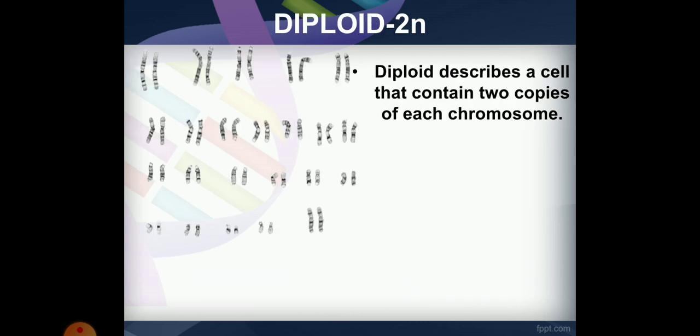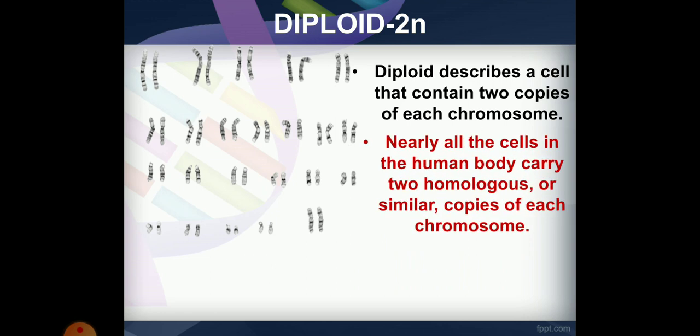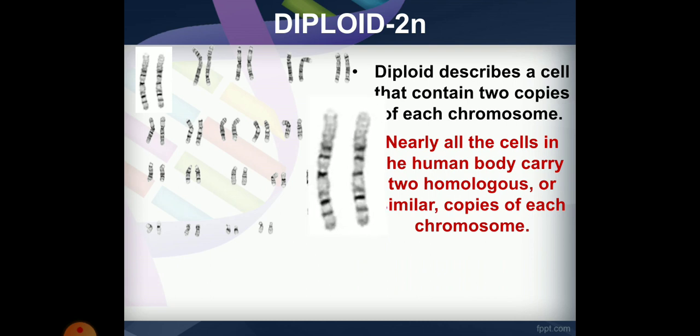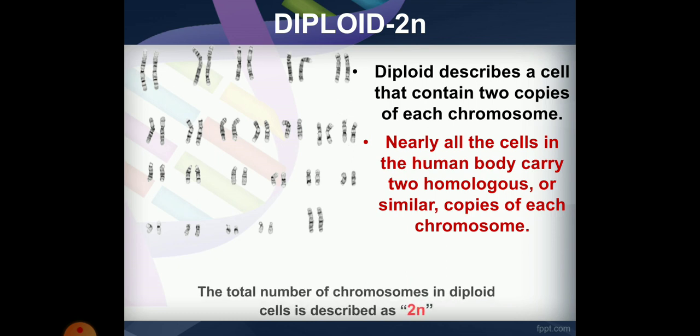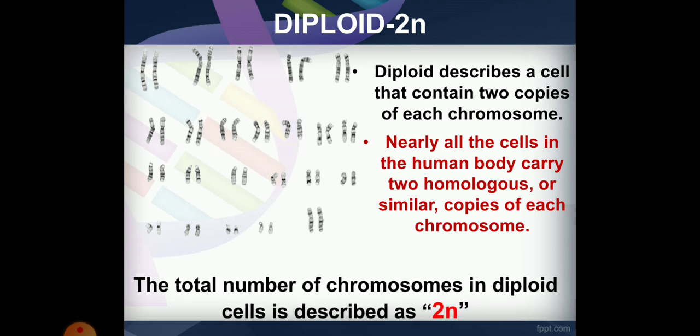All cells in the human body have a diploid number of chromosomes. These are homologous chromosomes. The two chromosomes represent 2N.